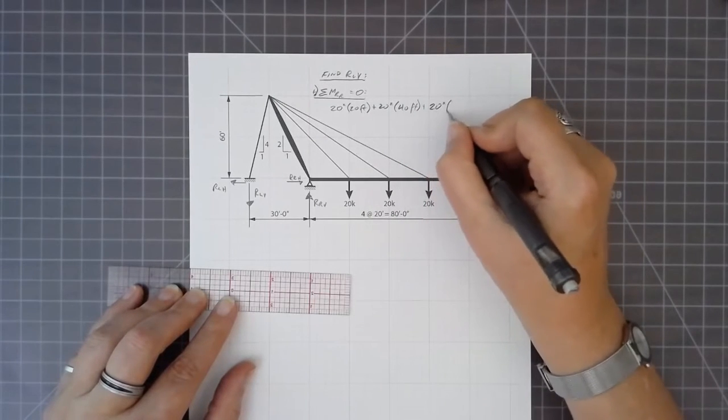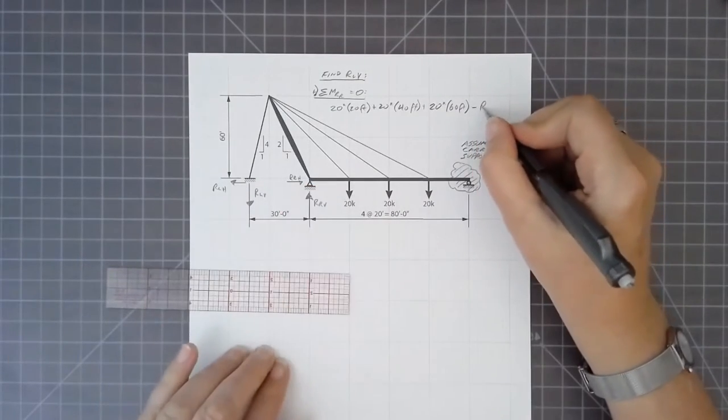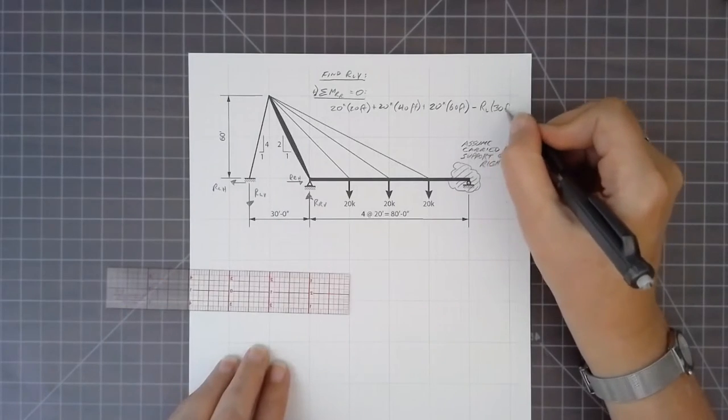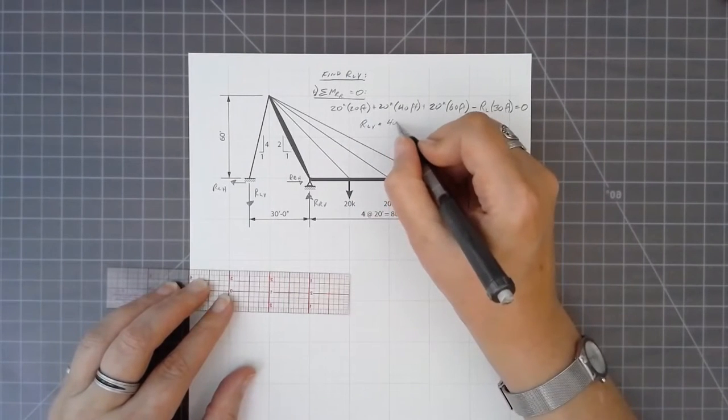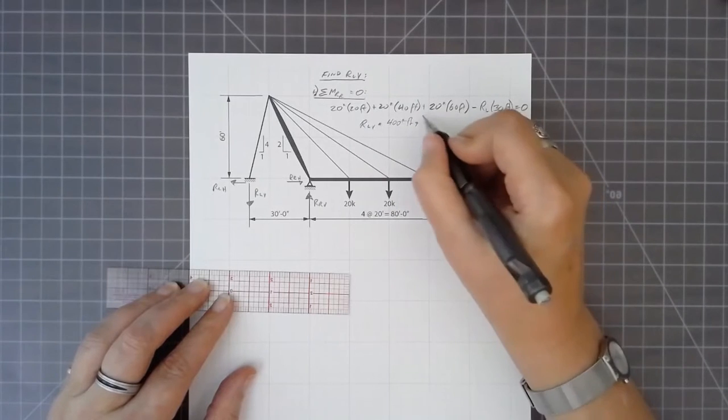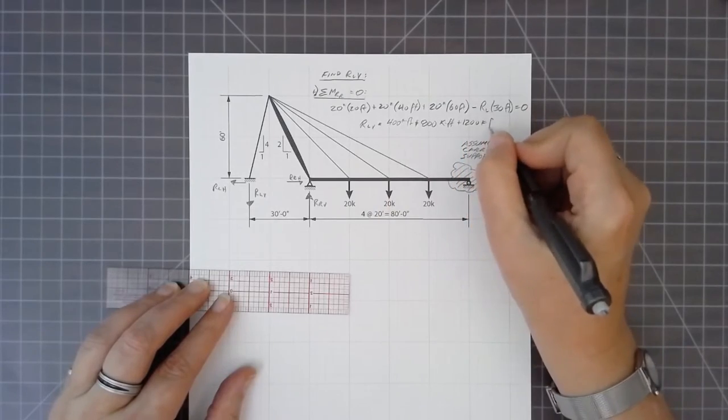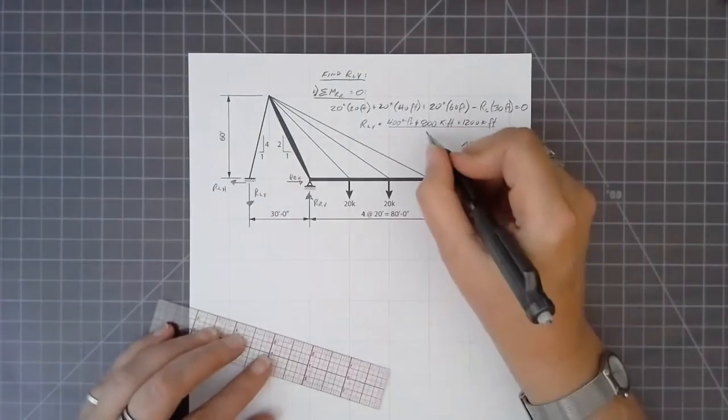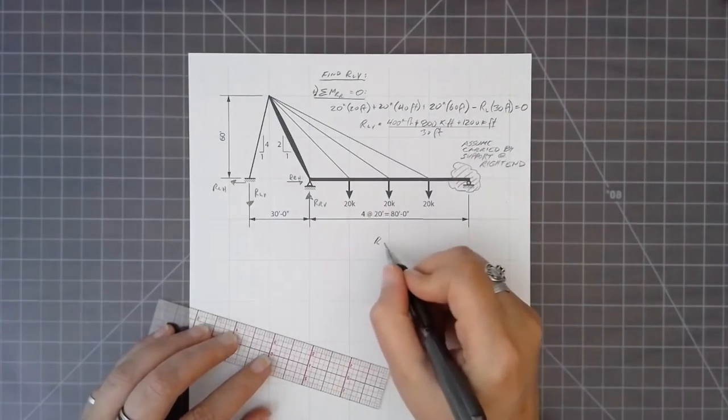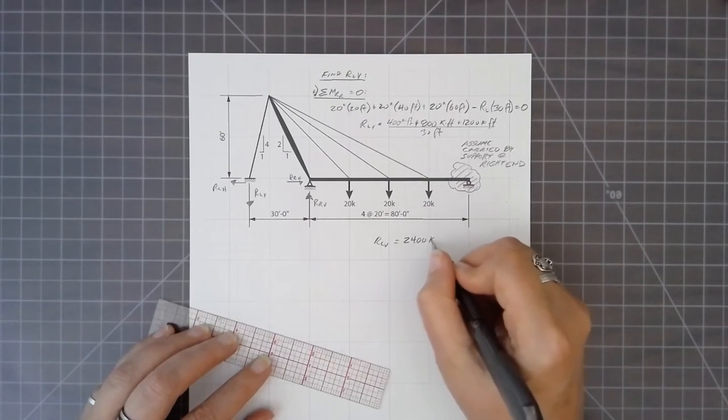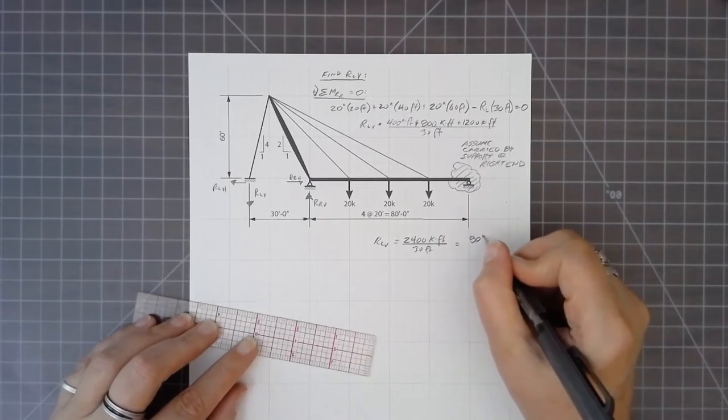Each at 20 feet for the first, 40 feet for the second, 60 feet for the third. That rotational tendency is balanced only by the vertical component of the left-hand end. So we can do our calculations: first term is 400 kip-feet, second is 800 kip-feet, the third is 1200 kip-feet, and then the distance is 30 feet to the left-hand end.